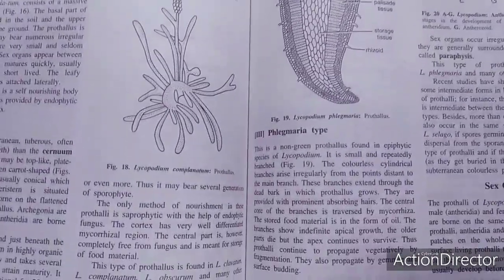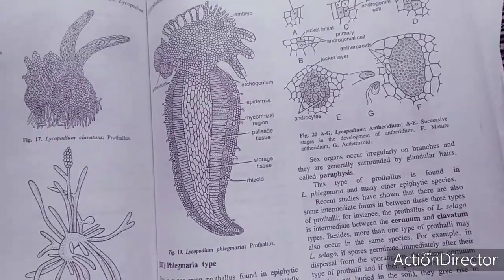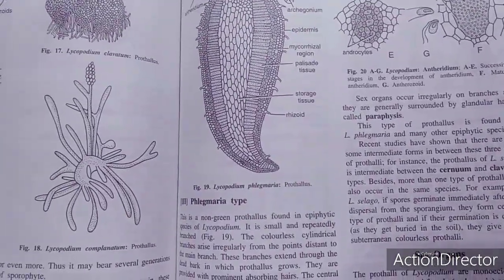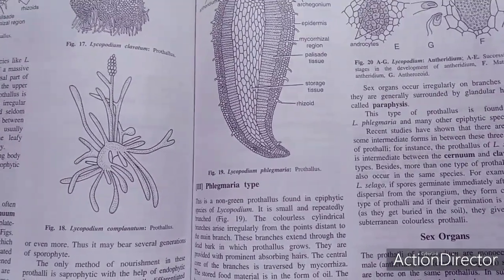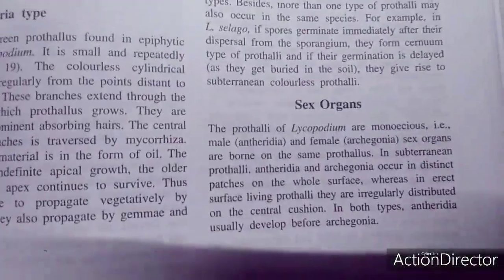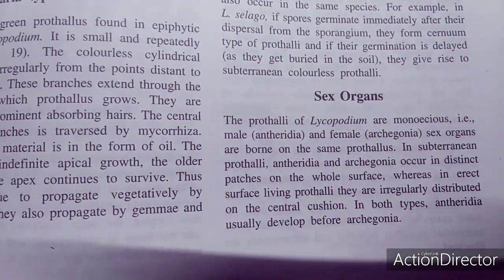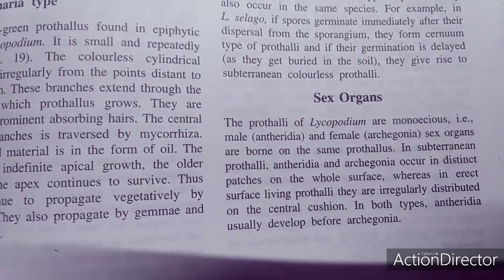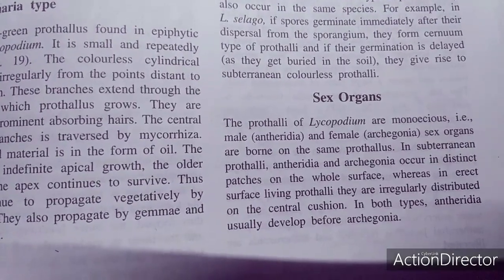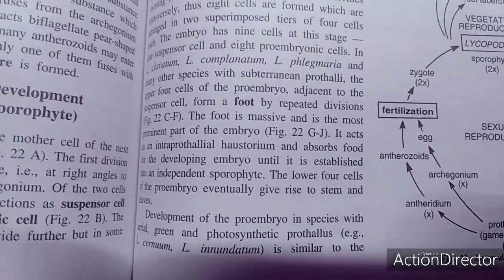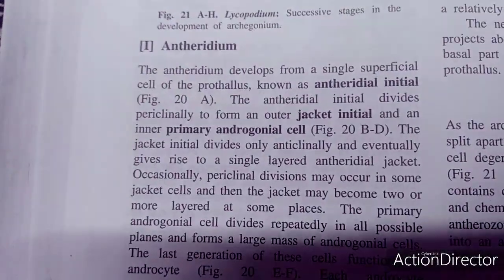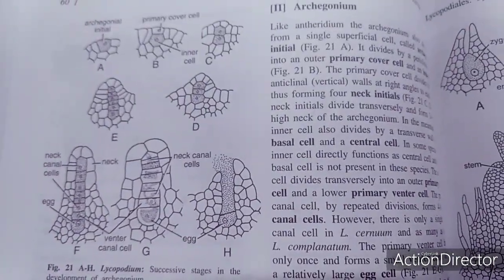Different types of prothallus development have been recognized: Serratum type, Clavatum type, and Phlegmaria type. The gametophyte development varies by species. Lycopodium is monoecious — male antheridia and female archegonia are borne on the same prothallus. It produces only one type of spore, with no difference between microspore and megaspore.